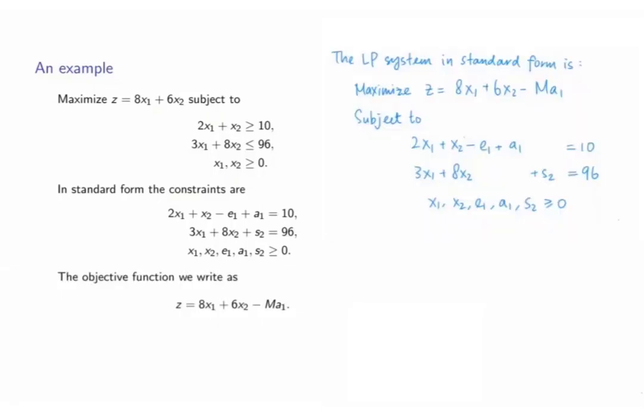Since an artificial variable is added, we need to modify the objective function to be z equals 8x1 plus 6x2 minus m times a1, where m is a huge positive constant. Therefore, we get the following linear programming problem in standard form.